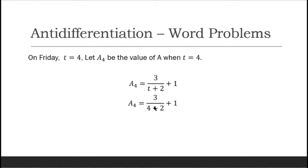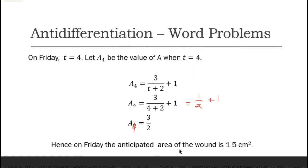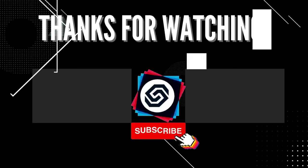A₄ = 3/(4 + 2) + 1 = 3/6 + 1 = 1/2 + 1 = 3/2. Therefore A₄ = 3/2, which is 1.5. Hence on Friday, the anticipated area of the wound is 1.5 square centimeters. And that's it, thank you.